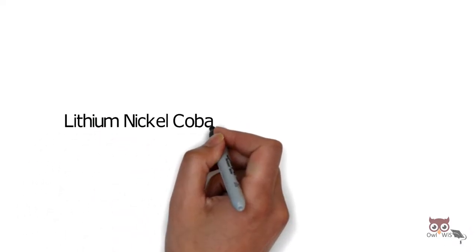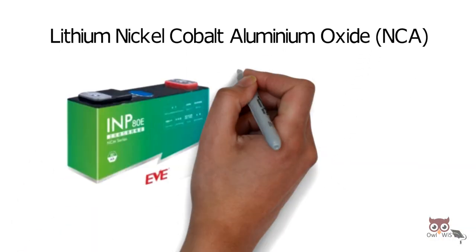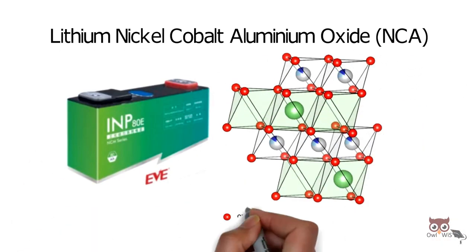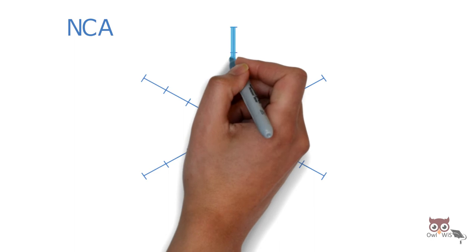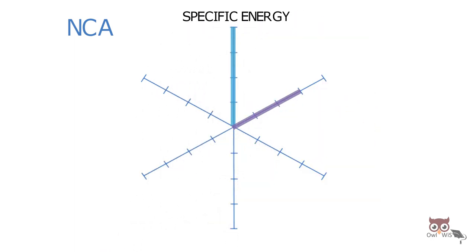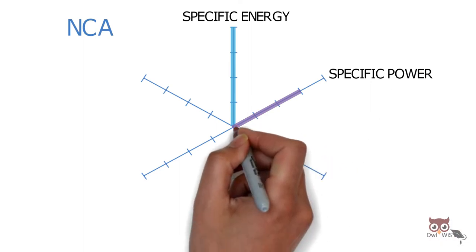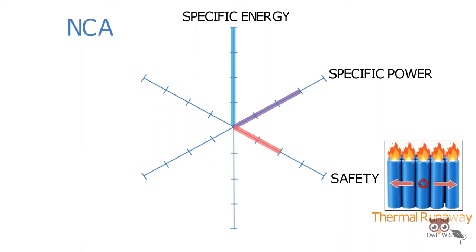Lithium Nickel Cobalt Aluminium Oxide (NCA) uses nickel, cobalt, and aluminium as the active material in its cathode. It has high voltage with high specific energy and optimum specific power. Relatively low safety, as it has thermal runaway issues which occur at temperatures greater than 150 degrees Celsius. It has optimum performance,